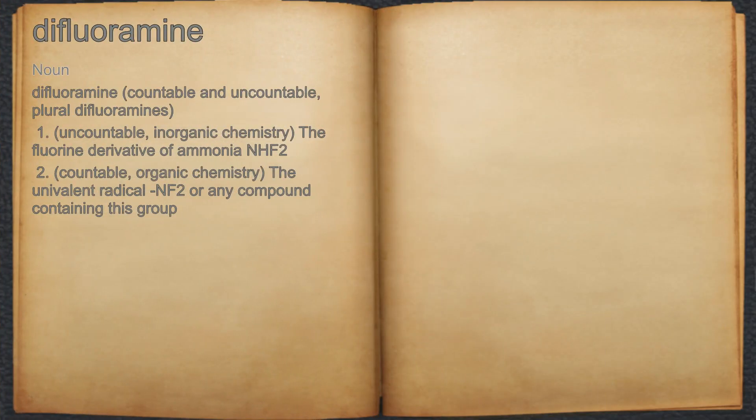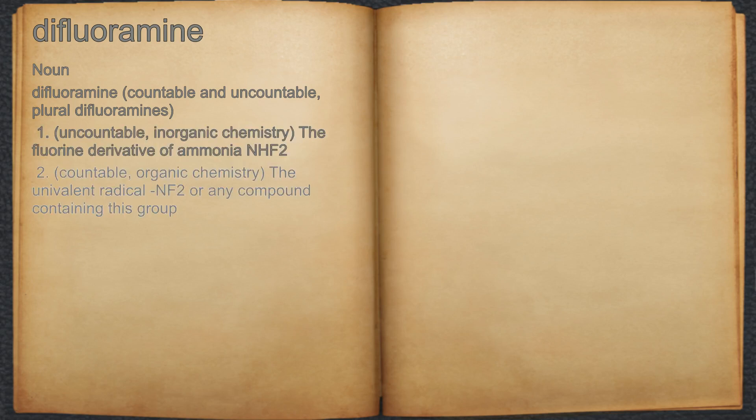Difluoramine. Noun. 1. Uncountable, inorganic chemistry: the fluorine derivative of ammonia, NHF₂. 2. Countable, organic chemistry: the univalent radical NF₂, or any compound containing this group.